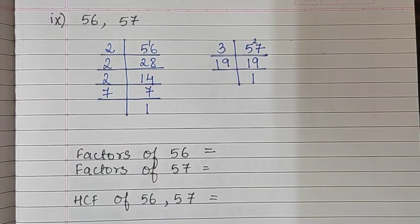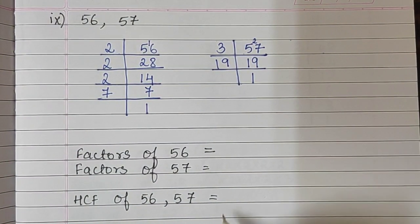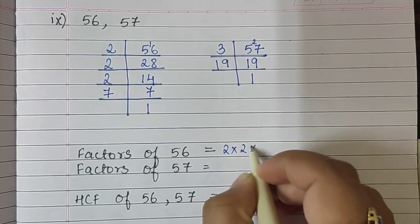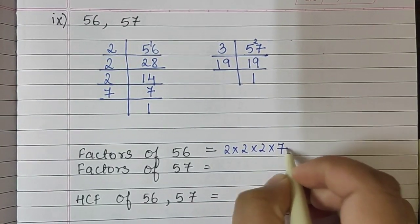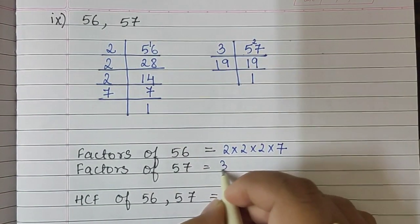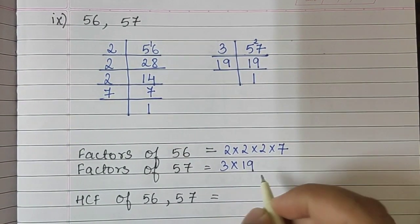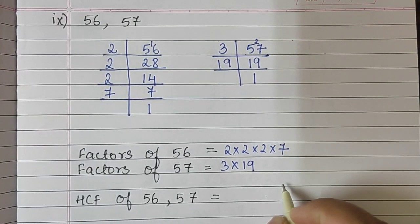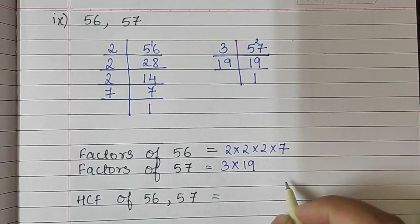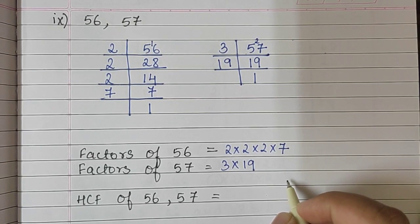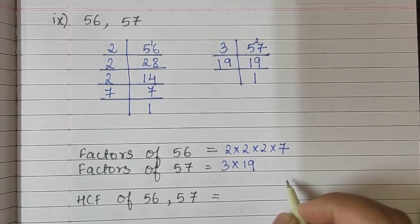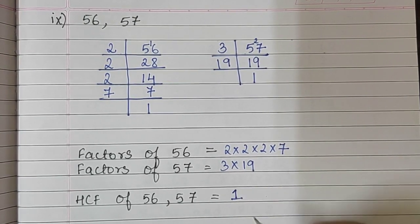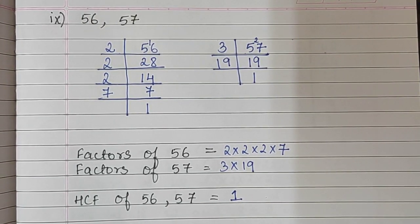So these are the factors of 56 and 57. Let's note them down. 56 is 2 into 2 into 2 into 7, and 57 is 3 into 19. Is anything common here? No. So as we remember from the previous sum, if nothing is common, then the HCF is the number 1.